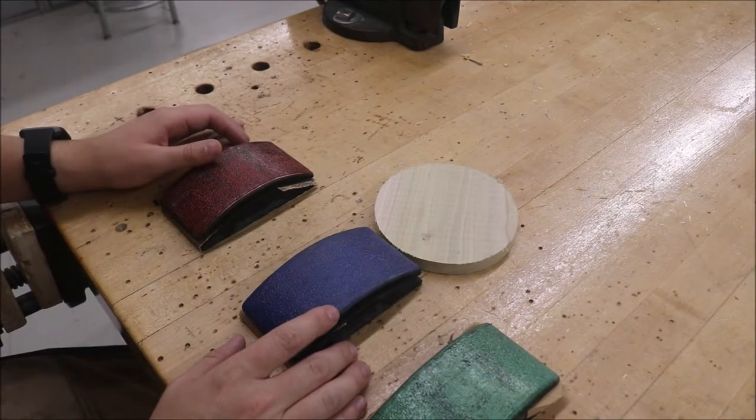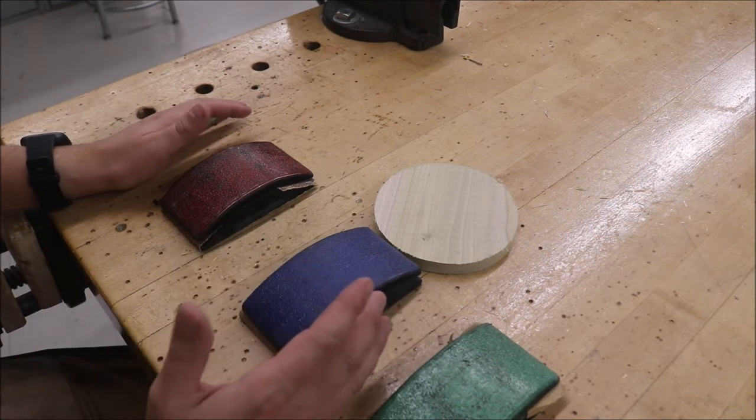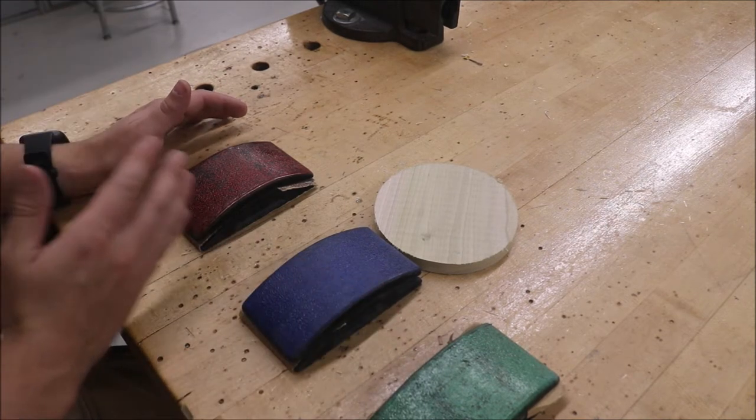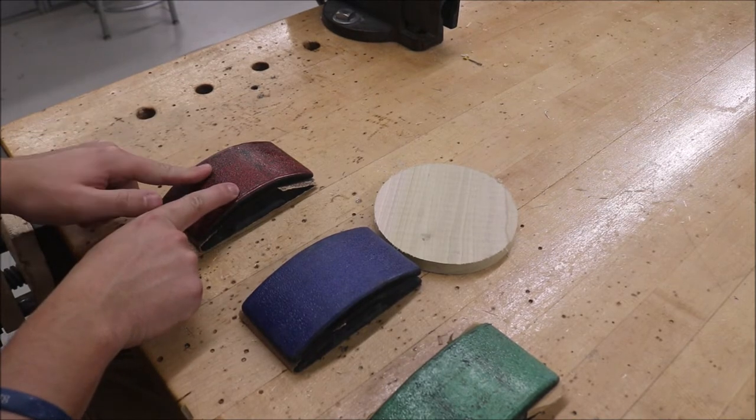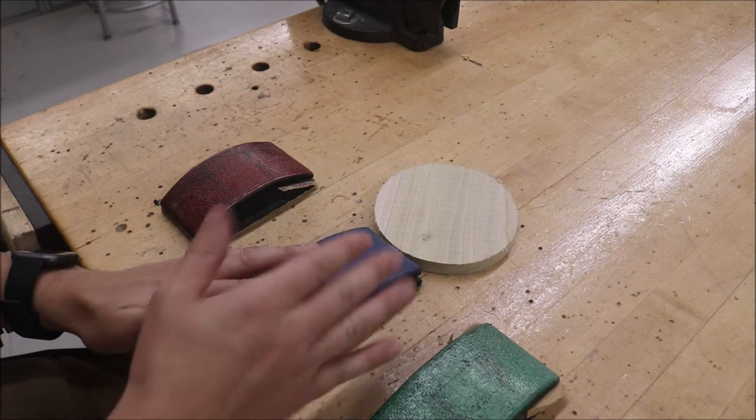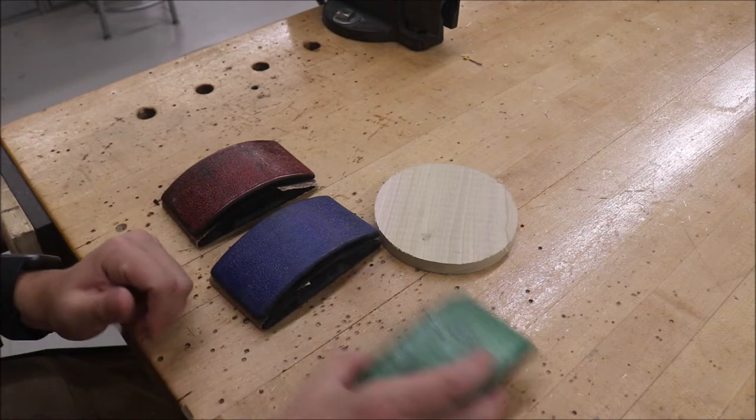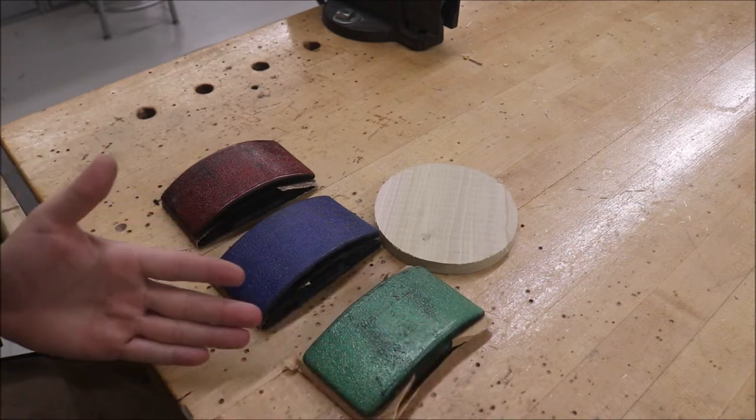The next thing we're going to do with our project is sand it with sandpaper. Now just like we talked about before, we're going to go through each of the different grits of sandpaper, starting with the coarse which is around 80 grit or 60. We're going to move on to medium, which is around 100 or 120, and then after we sand with those two, we're going to finish it off with fine or 220.